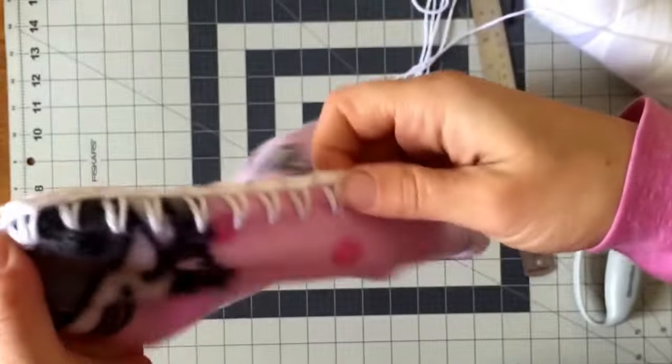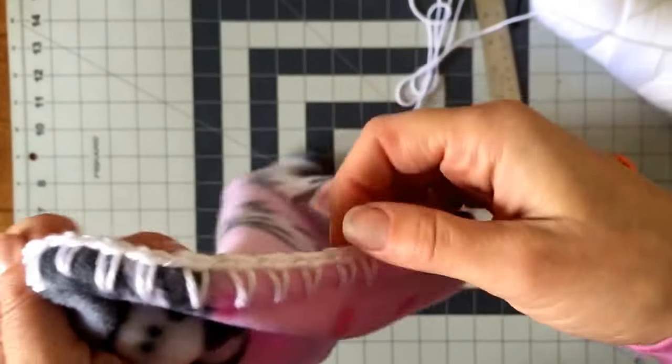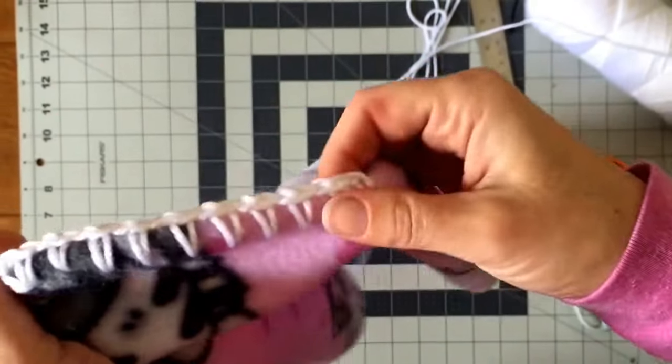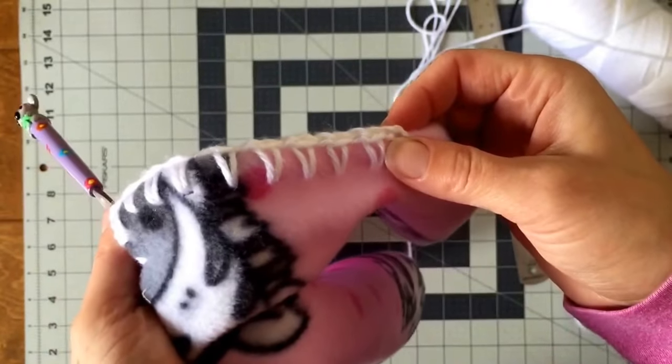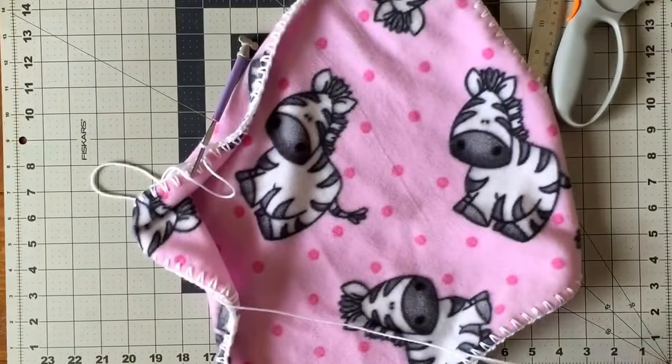And all you got to do is keep crocheting around, single crochet, chain one all the way around. And when you get back to the beginning, just go ahead and single crochet in each stitch around. You can continue that for as long as you want, and you got your edge.